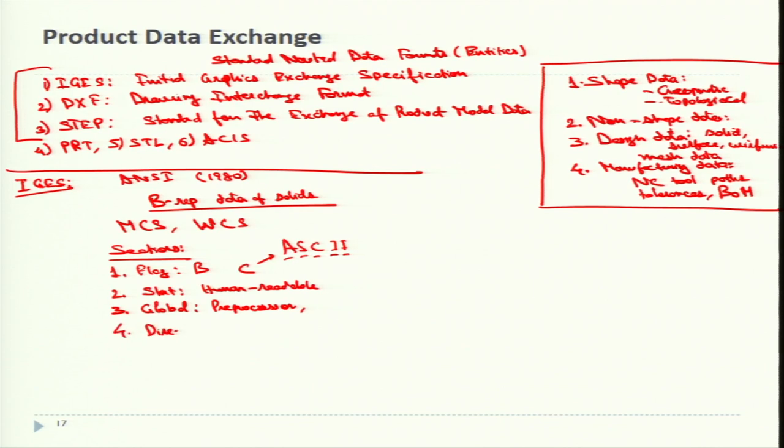Next is the directory entry section. When I say directory entry, it is the one that has the 80 characters that I talked about. Directory entry is the list of all the entities which are defined in the IGES file together. Here different entities are there. Then entities are divided into different fields. The field contains the pointer to the parameter data entry for the entity in the parameter data section.